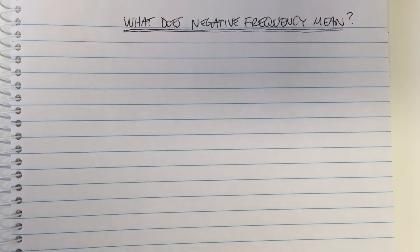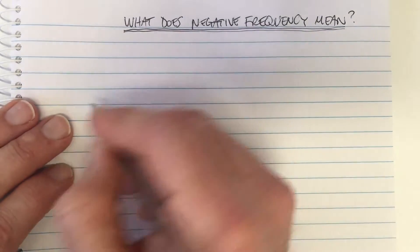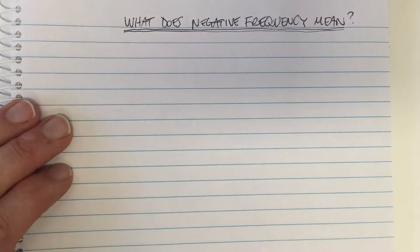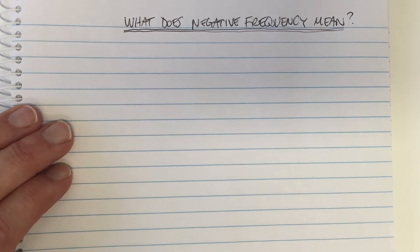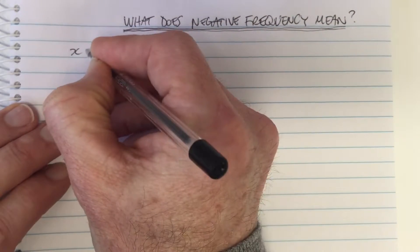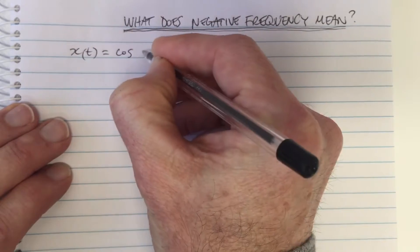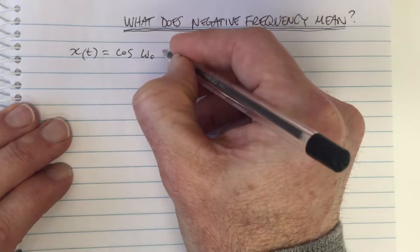So let's try to answer the question, what is negative frequency? And this often comes up to confuse people when they first start thinking about Fourier transforms. So let's think of a cos waveform. So x(t) equals cos, and let's say it is at a particular frequency of omega 0.